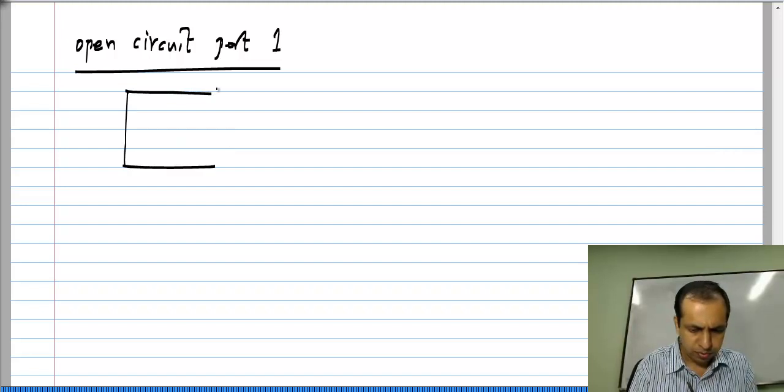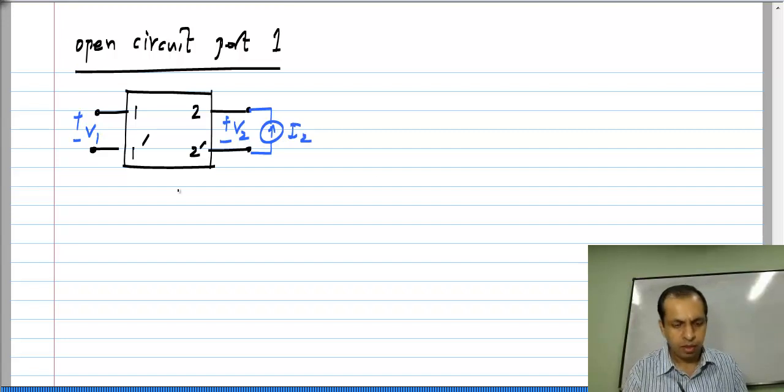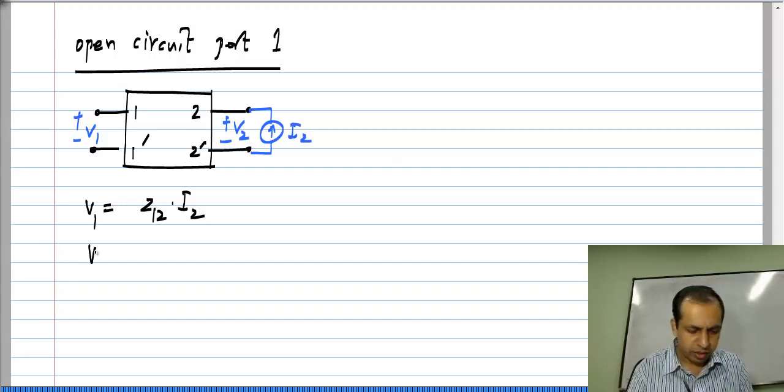So, measuring the other two is quite simple. For measuring Z12 and Z22, open circuit port number 1 that is you do not connect anything to port 1. You connect I2 to port 2 and measure both V2 and V1. So, the first equation reduces to V1 equals Z12·I2, because Z11·I1 is 0, because I1 is 0 and V2 will be Z22·I2.